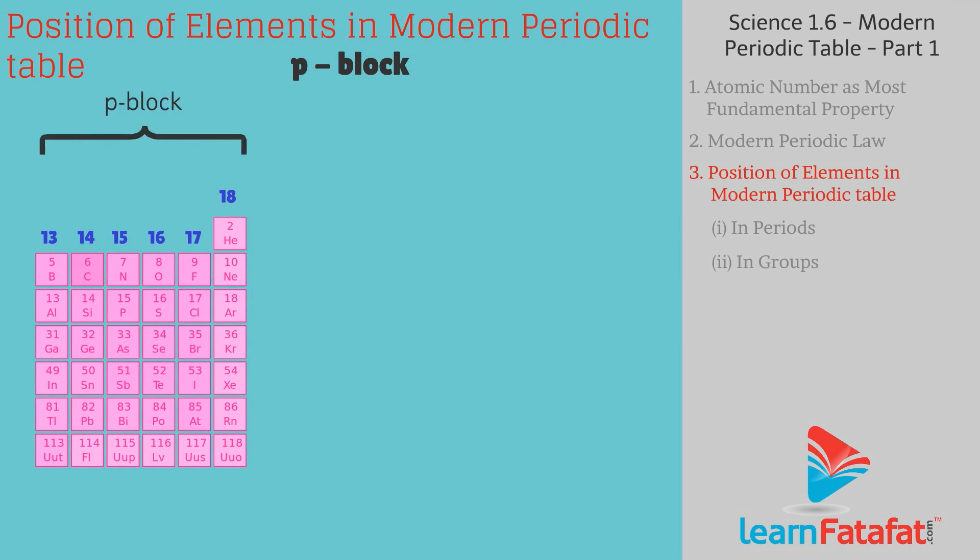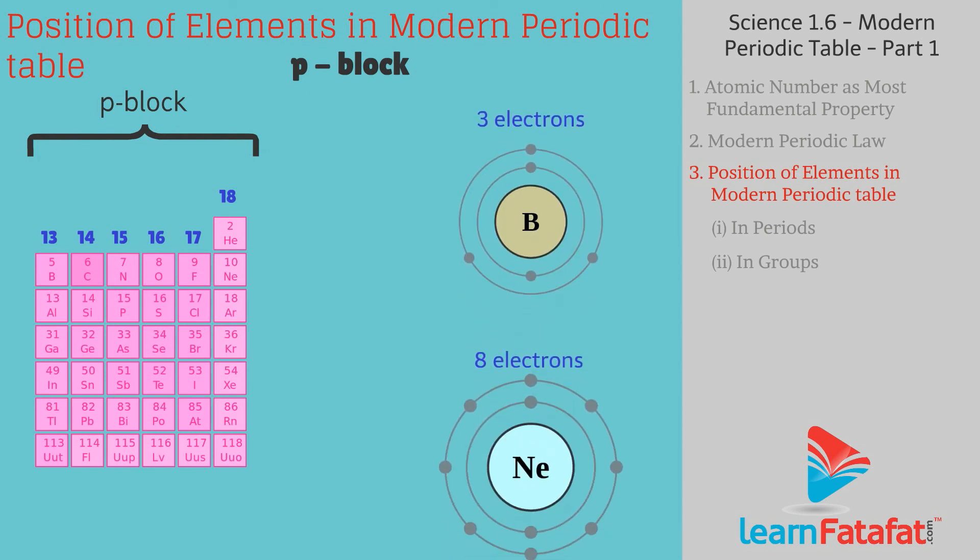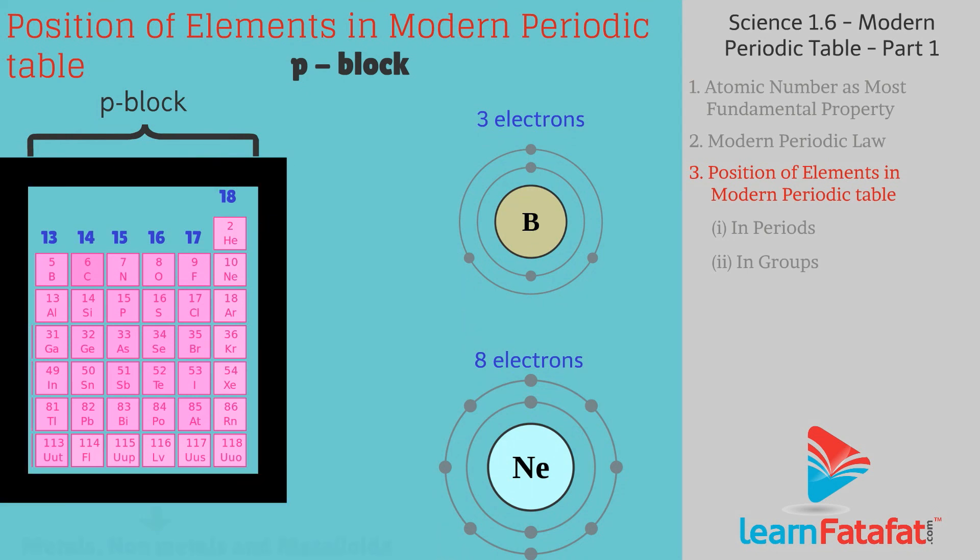P block: Elements of groups 13 to 18 are called P block elements. The outermost shell of P block element contains 3 to 8 electrons. P block contains metals, non-metals and metalloids too.